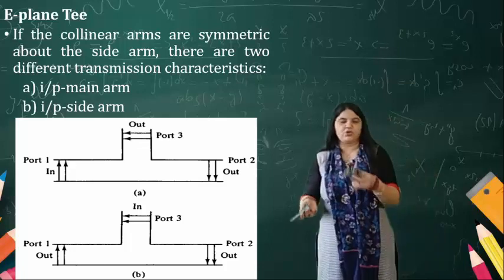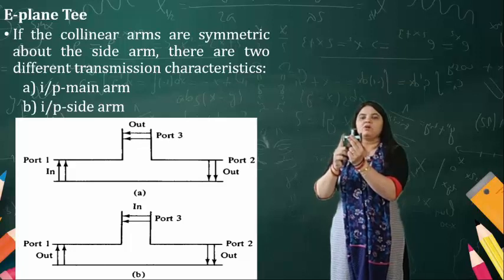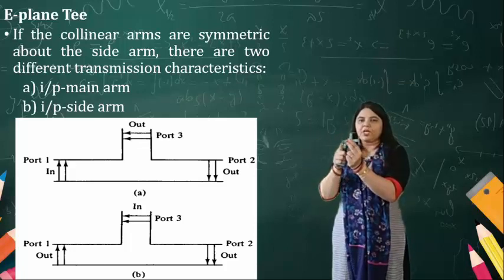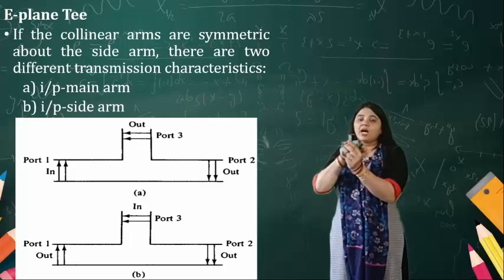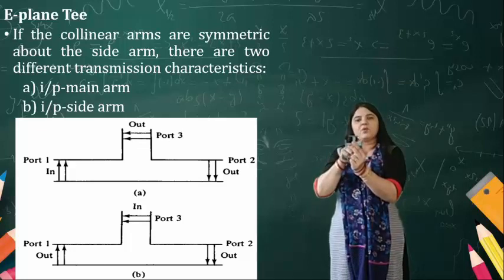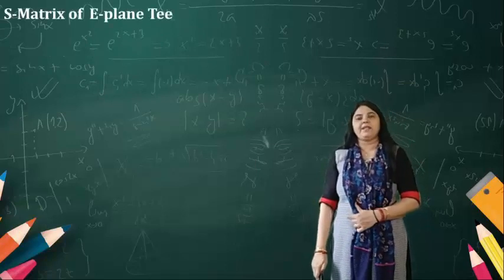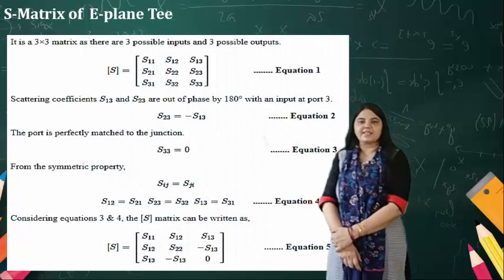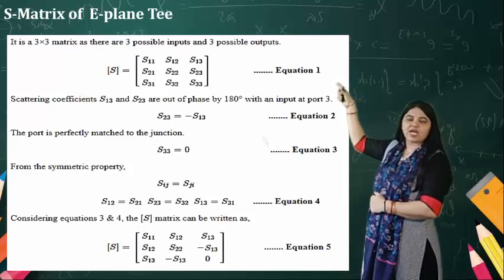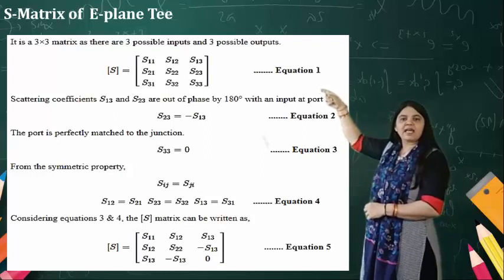When applying input from port number one, we get output at port number two and port number three. The output at port number two is 180 degrees phase-shifted relative to port number one, while at port number three we get the summation of port one and port two. Now for the S-matrix of the E-plane T: with three ports, we have a 3×3 matrix with elements S11, S12, S13, S21, S22, S23, S31, S32, S33.